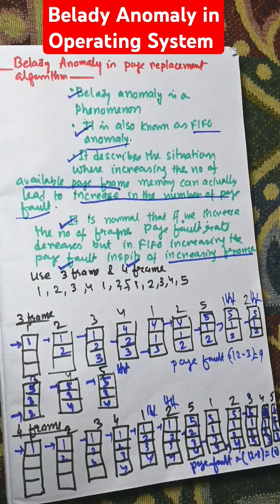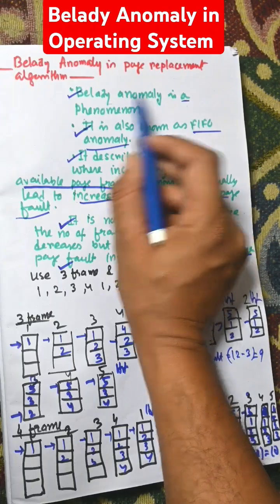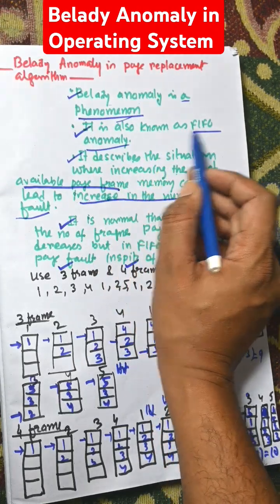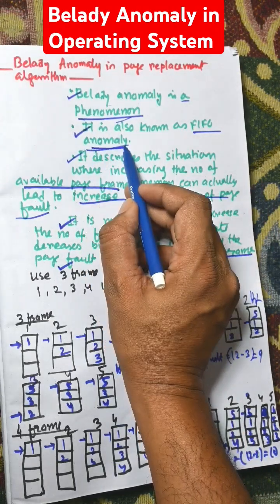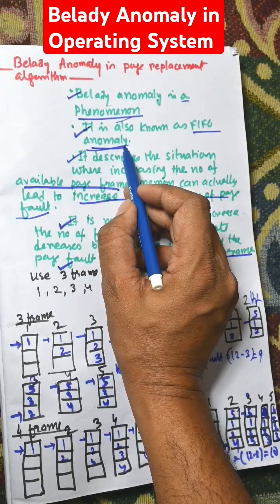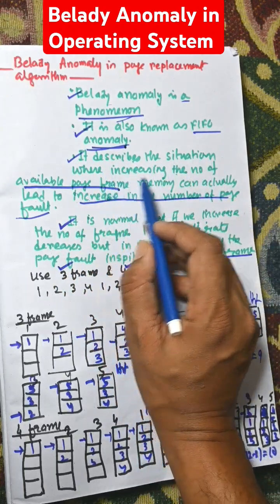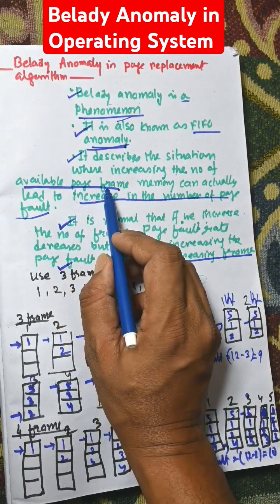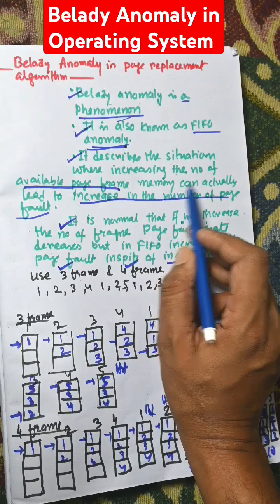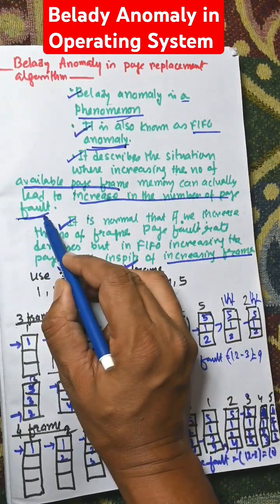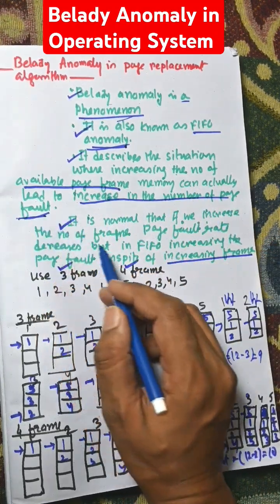Hi everybody. In this video I am going to discuss Belady's anomaly in page replacement algorithm. Belady's anomaly is a phenomenon, also known as FIFO anomaly. It describes the situation where increasing the number of available page frames in memory can actually lead to an increase in the number of page faults.